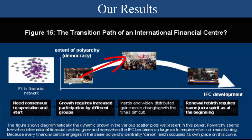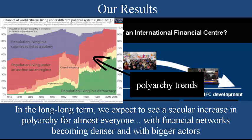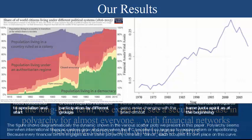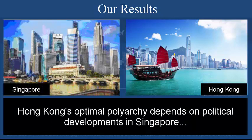Yet, particularly for highly developed financial centers, this polyarchy tends to be increasing over time as they seek to remain competitive in this international configuration. This shows that polyarchy responds to a jurisdiction's eigencentrality, and that that dynamic response depends on its competitiveness and on polyarchy in those other jurisdictions.